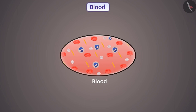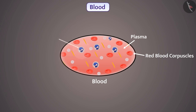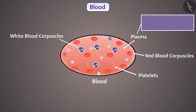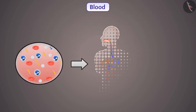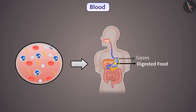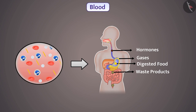The fluid matrix of blood is called plasma. In plasma, red blood corpuscles, white blood corpuscles, and platelets are suspended. Plasma also contains water, glucose, proteins, salts, enzymes, and hormones. We know that blood transports digested food, gases, hormones, and waste products from one part to another part in the body — that means it performs the function of transportation.